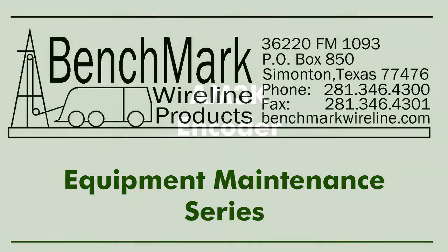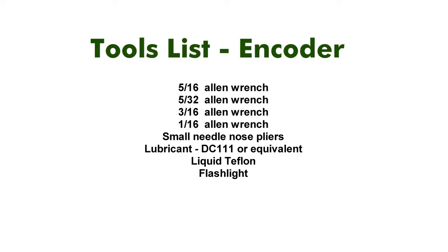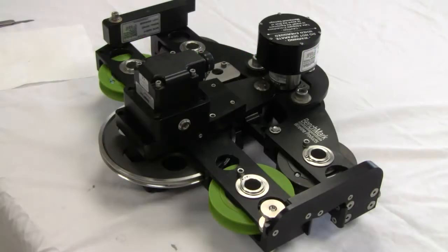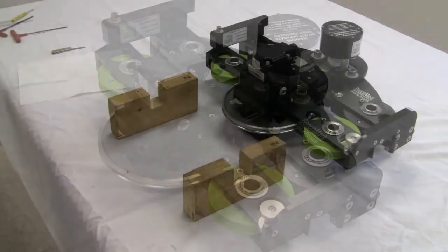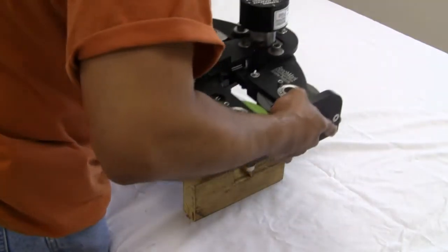This video will demonstrate how to change the encoder on the AM3K measuring head from Benchmark Wireline. For ease of access, position the measuring head on its side with the encoder facing up.